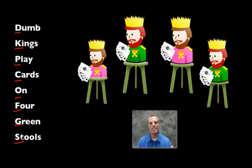So again, I rephrase that. Dumb kings play cards on four green stools. Get this image right there locked into your head. If you remember that image, you'll be able to remember the phrase. You remember the phrase, you know your hierarchical system. So that's one easy way to remember it.